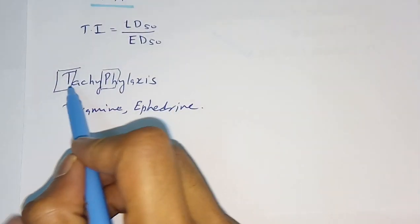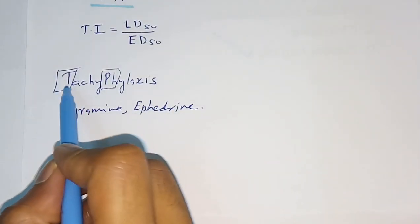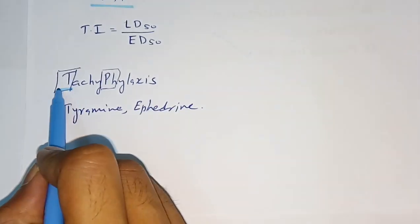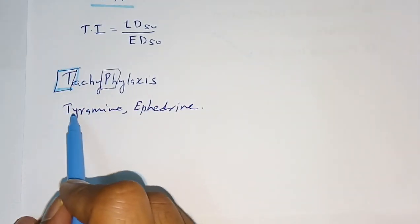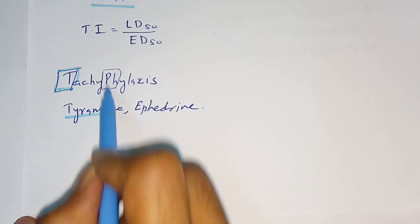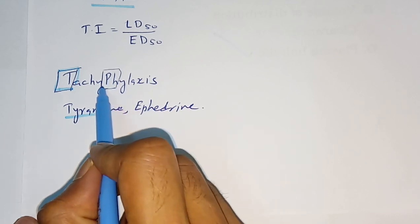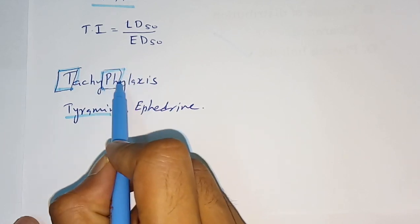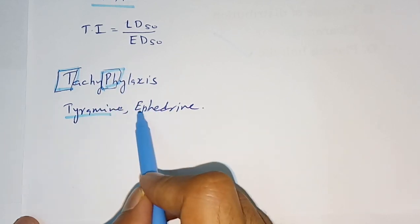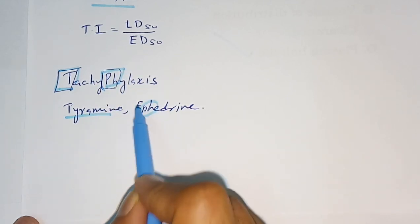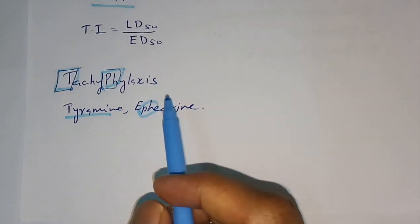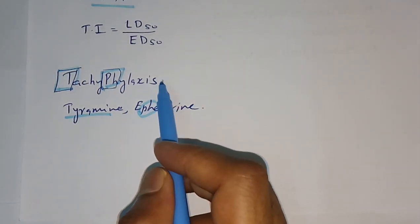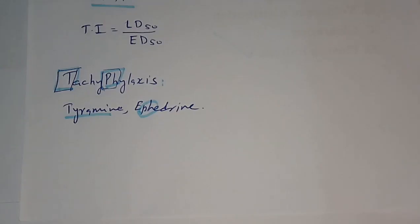So tachyphylaxis examples: T stands for tyramine, and PH stands for ephedrine. Its examples are tyramine and ephedrine.